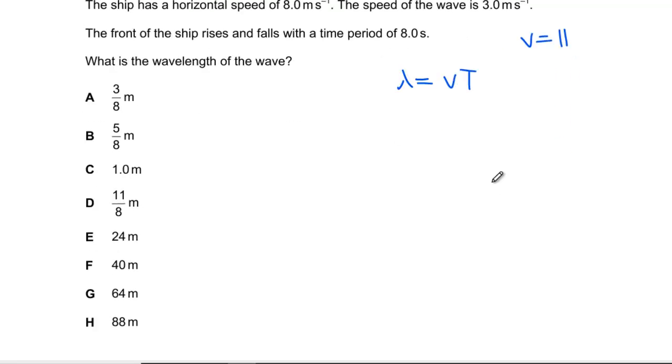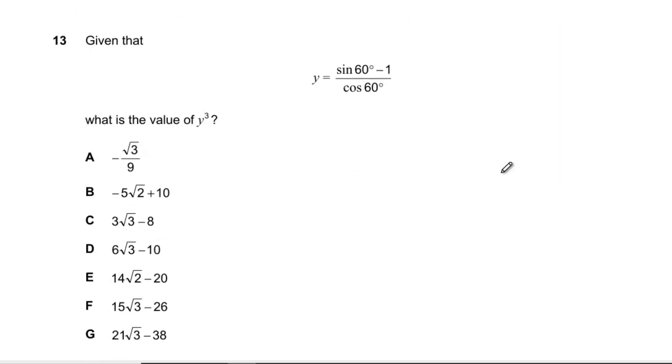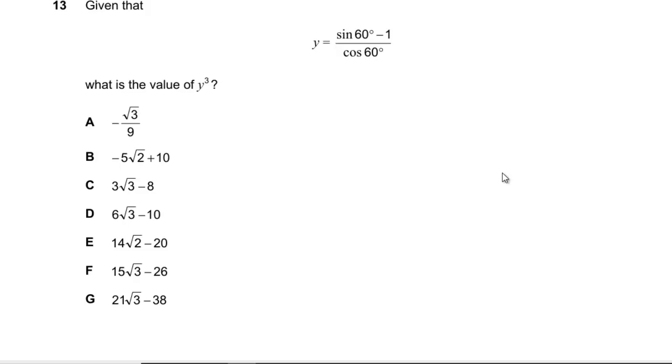Question 13: Given that y equals (√3 - 2)/(1/2), what is the value of y³? We've got √3 - 2 over ½, so √3 - 2 times 2. I need to cube that, so I'm going to get 3√3, -8, three lots of the cross terms gives -18, and then plus 12√3. So I've got 15√3 - 26, which is F.